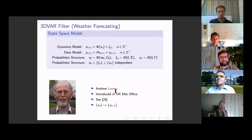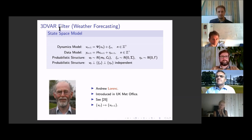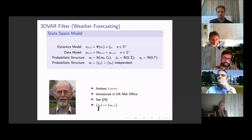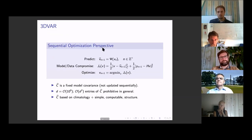This idea was introduced by Andrew Lorenz — despite the 'z' at the end, pronounced like Lorenz as in the Lorenz equations — who worked at the UK Met Office where he was until recently head of data assimilation. The 3D-var method is based on the optimization principle at the heart of the Kalman filter but does not update covariances — it simply updates the state — giving a non-linear mapping from the state at time n to the state at time n+1 using the model and data.